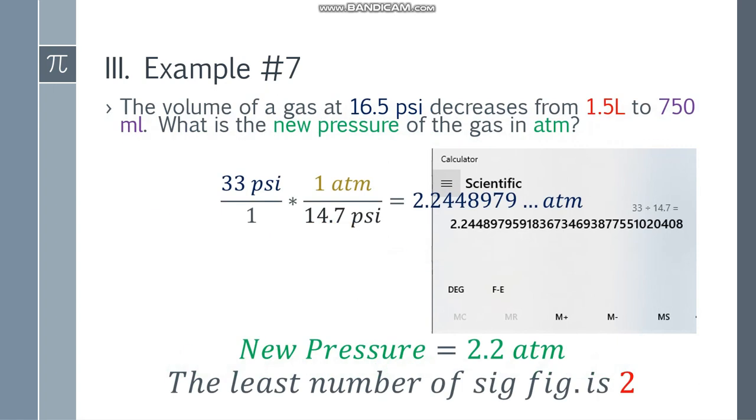What's the final answer? 2.2 atm. Why? The least number of significant figures is 2. Remember: 16.5 has three significant figures, 1.5 liters or 1500 ml have two significant figures, and 750 ml has two. So 2.2, and since the next digit is 4, we round down.